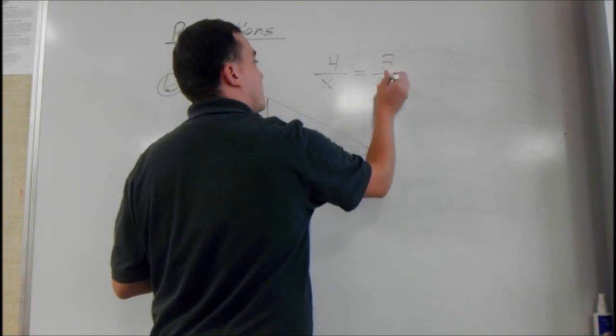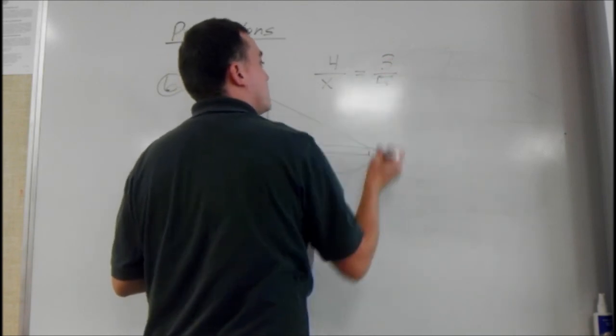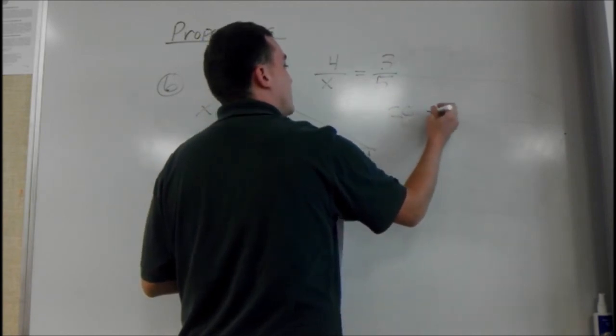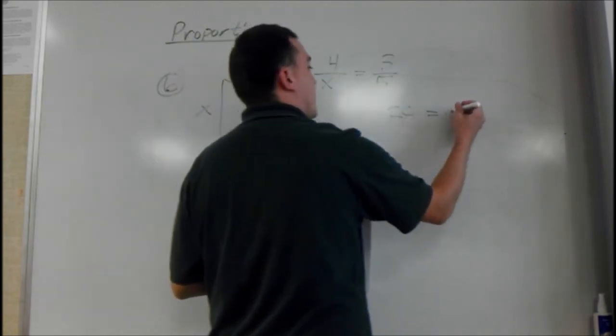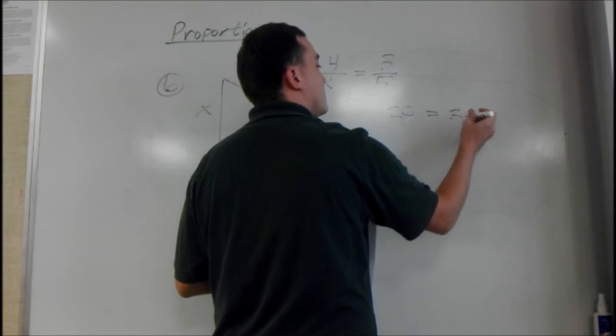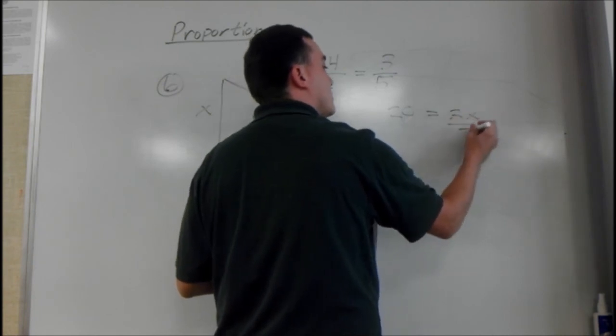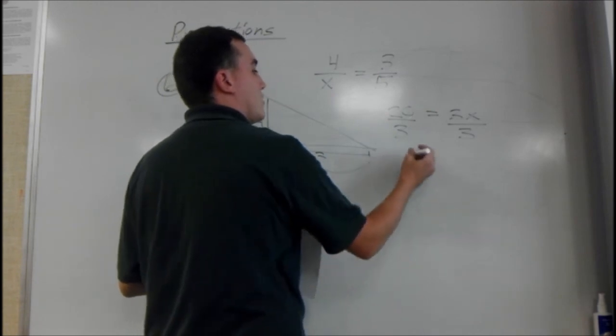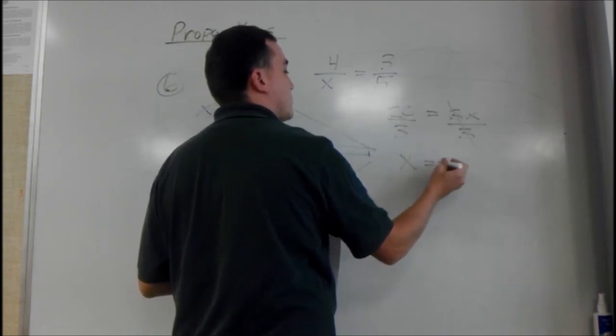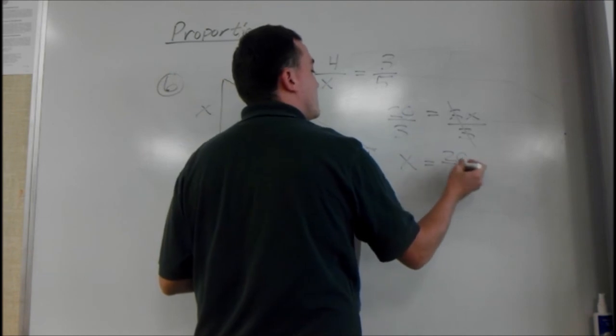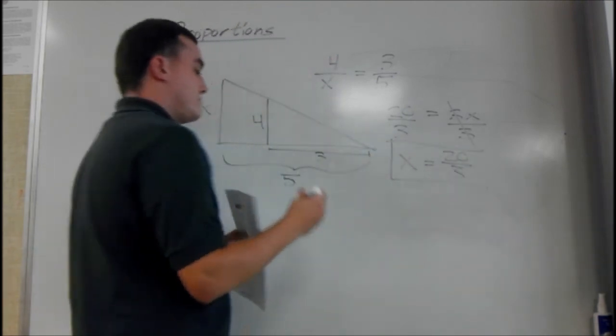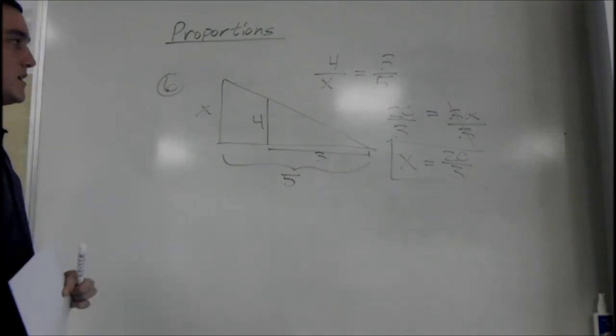And then you solve it. So we have 4 times 5 is 20. Equals 3 times x is 3x. And then divide by 3 on both sides. So those cancel. And then x equals 20 over 3. You can't reduce that. So you're done. And that's it.